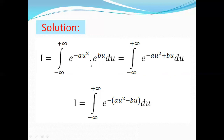Here we have the same base, so we will add the two powers. So I equals the integral from minus infinity to plus infinity of e to the power minus a·u² + b·u, all du. Here we will take out the negative sign as a common factor, so I becomes the integral from minus infinity to plus infinity of e to the power minus (a·u² minus b·u), all du.